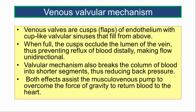Venous valvular mechanism: Venous valves are cusps or flaps of endothelium with cup-like valvular sinuses that fill from above. When full, the cusps occlude the lumen of the vein, preventing reflux of blood distally and making flow unidirectional. The valvular mechanism also breaks the column of blood into shorter segments, reducing back pressure. Both these effects assist the musculovenous pump to overcome gravity and return blood to the heart.